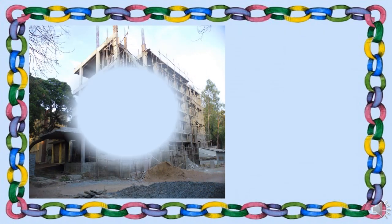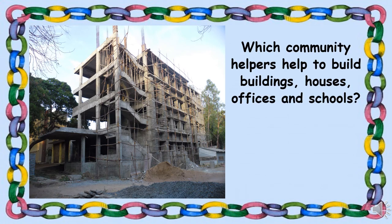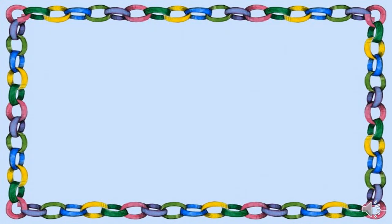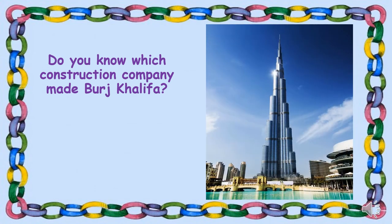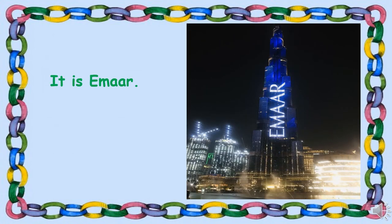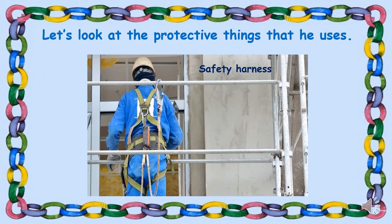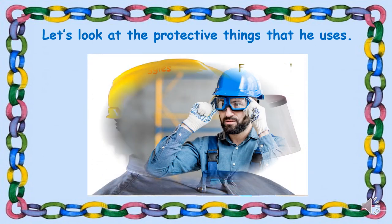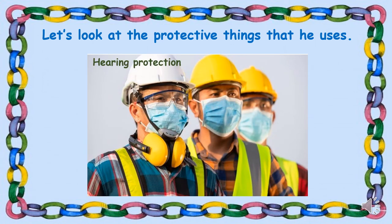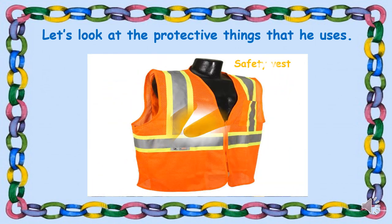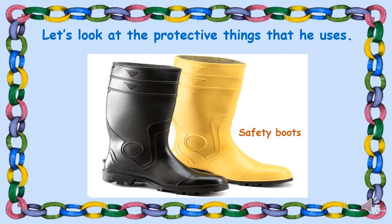Which community helpers help to build buildings, houses, offices, and schools? They are called construction workers. The company that made Burj Khalifa is Emaar. The protective equipment they use includes safety harness, safety goggles, face shield, hearing protection, hard hat, protective gloves, safety vest, safety boots, and tool belt.